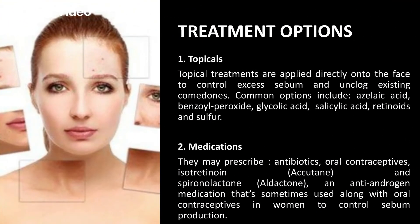What are the treatment options available? Initially we start with the topical treatment, which is the surface treatment. Topical treatment creams are applied on the face to control the excess sebum, because this excess sebum combines with the dead cells and hair follicles to form comedones and basically clogs them. To unclog the existing comedones, we need treatment with surface creams. Common options include azelaic acid, benzoyl peroxide, glycolic acid, salicylic acid, retinoids and sulfur. These substances basically help eliminate the top layer of skin which comprises the dead cells.